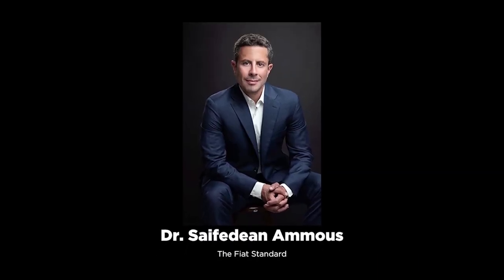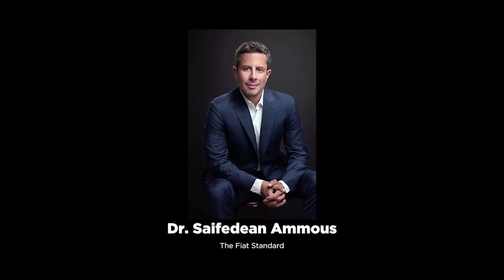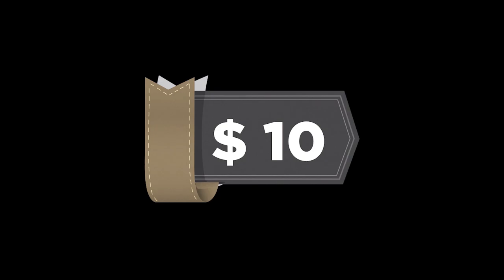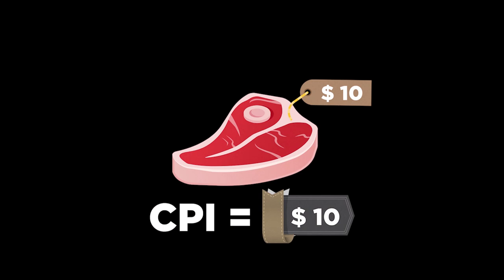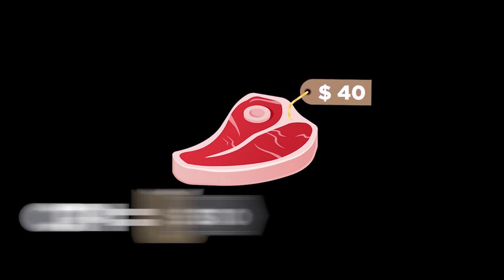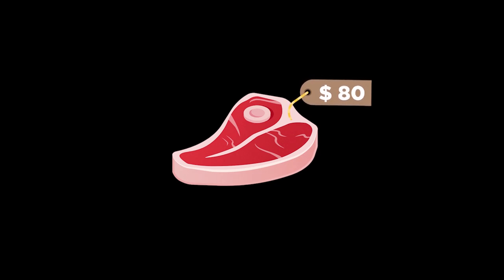Saifedean Ammous illustrates this properly in The Fiat Standard. Imagine you earn $10 a day and spend them all on eating a delicious ribeye steak that gives you all the nutrients you need for the day. In this simple consumer basket of goods, the CPI is $10. Now imagine one day hyperinflation strikes the economy and the price of your ribeye increases to $100, while your daily wage remains $10. What happens to the price of your basket of goods? It cannot rise tenfold because you cannot afford the $100 ribeye.